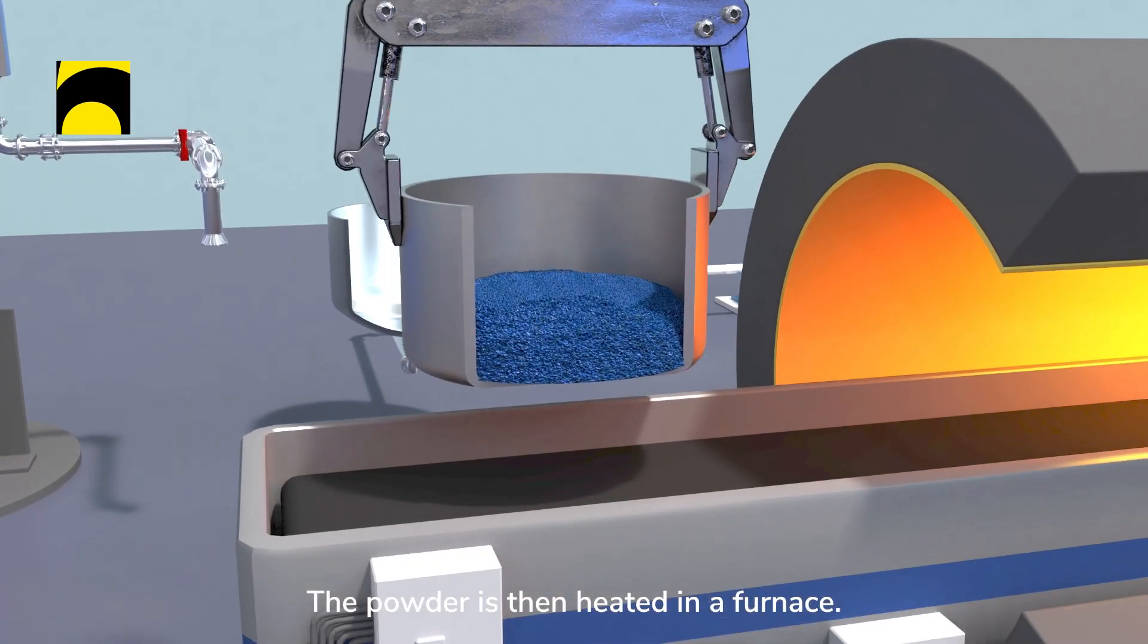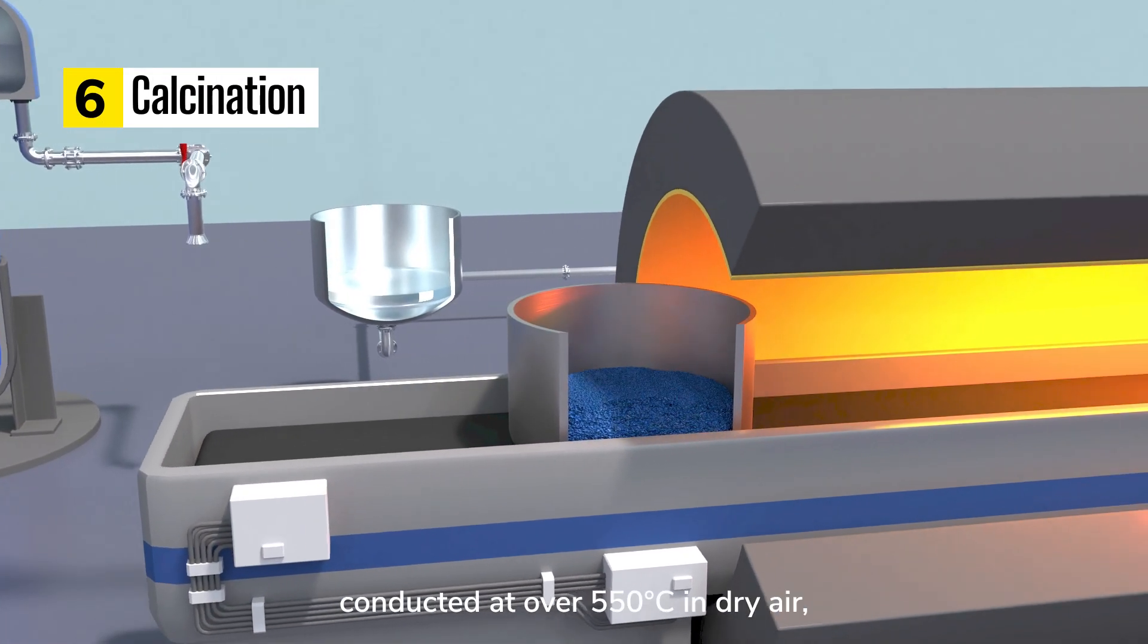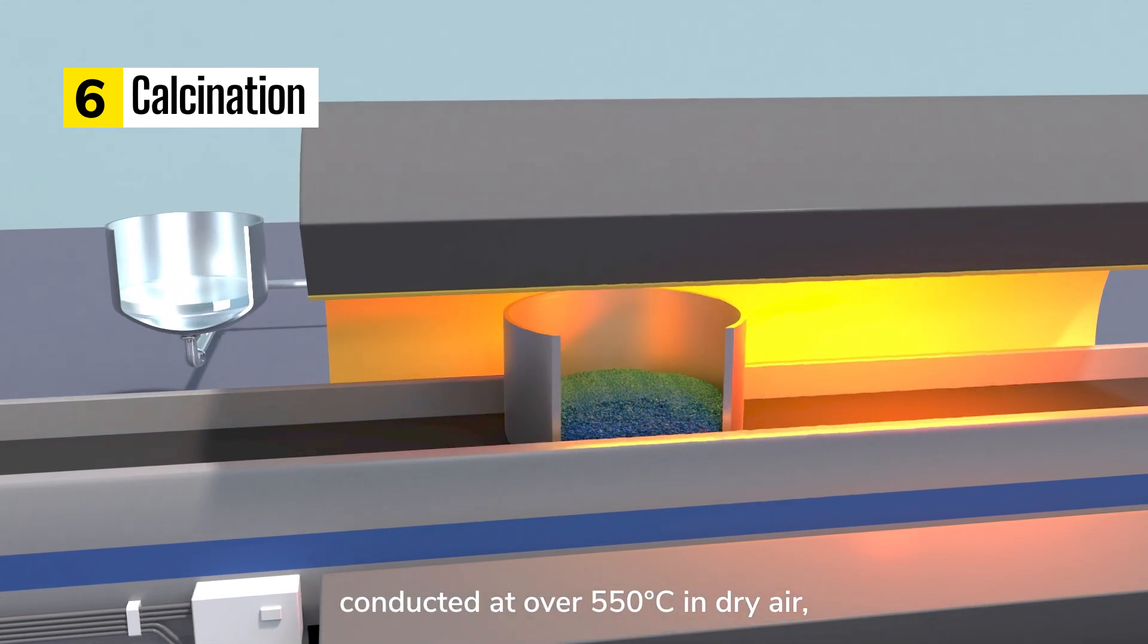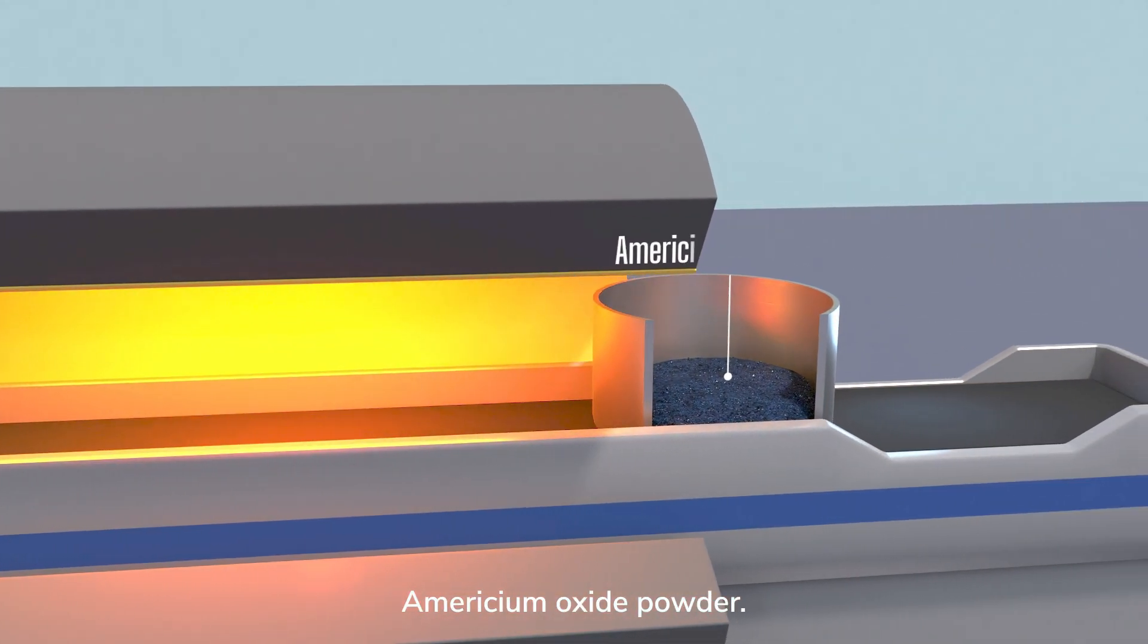The powder is then heated in a furnace. This final calcination step, conducted at over 550 degrees Celsius in dry air, produces the final product, Americium oxide powder.